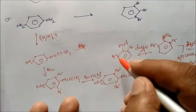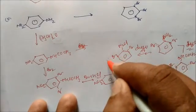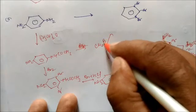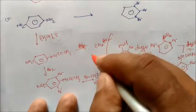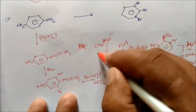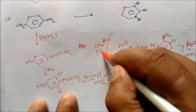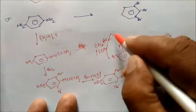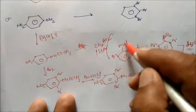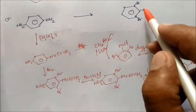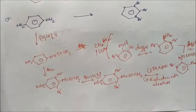Again use the Sandmeyer reaction: Cu2Br2 in presence of HBr (hydrogen bromide). The diazonium group N2Cl is replaced by Br, and you get the final product: 1,2,3-tribromobenzene.